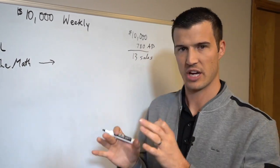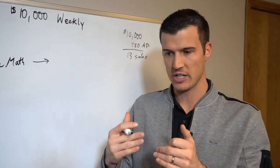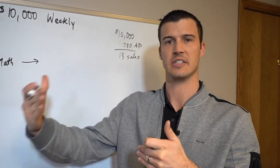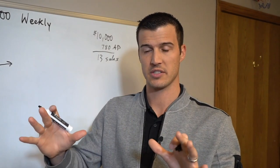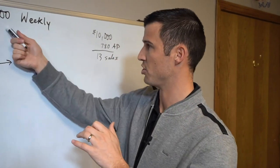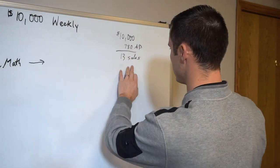So at 13 sales every single week, that's what you got to do. Every single week you have to write 13 sales. You're going to do that for 50 weeks. 50 weeks, 13 sales, and guess what? You just made half a million bucks. So 13 sales.